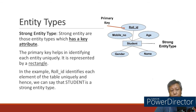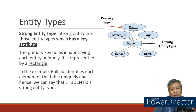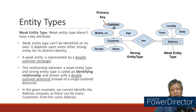Regarding entity types: a strong entity type has a primary key — represented by an attribute name with an underline. A weak entity depends on the primary key of the strong entity. The weak entity cannot exist if it is not related to a strong entity.